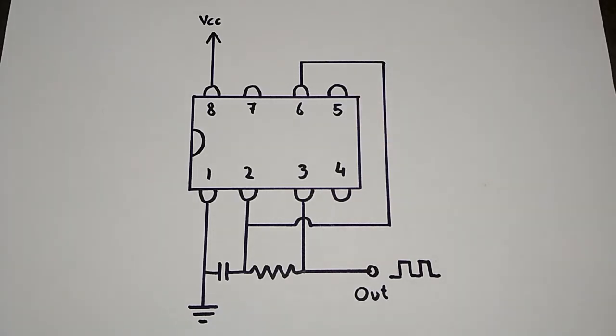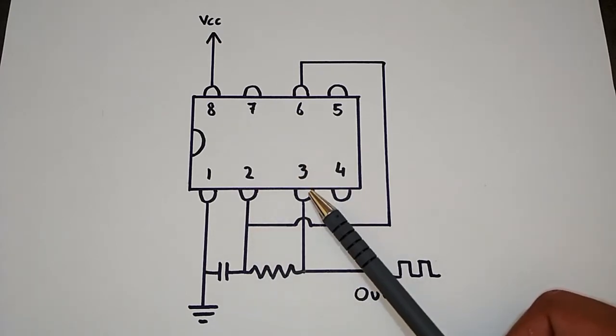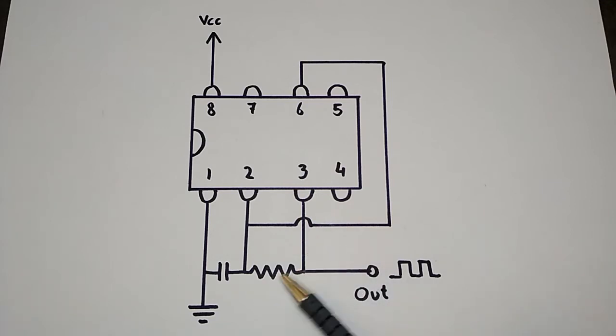So to understand how it works, let's begin by presuming that the capacitor is discharged. This means that pin 2 is at ground potential, or lower than ⅓ Vcc. So we'll bring the output pin 3 high. This means that the capacitor will get charged through the resistor.